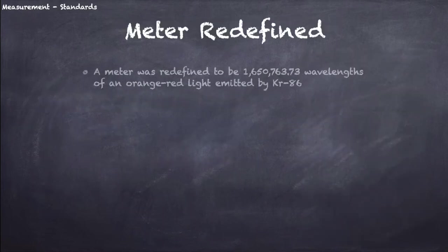For all these reasons, in 1960, a meter is redefined as 1,650,763.73 wavelengths of a particular orange-red light emitted by KR86. Great! But what does that mean?